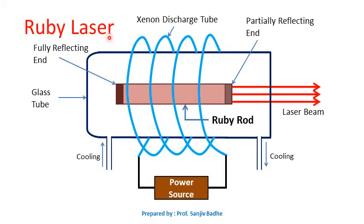In this session we will discuss the ruby laser. This diagram shows the construction of the ruby laser. Ruby laser is a solid state laser. The active medium is a rod of a ruby crystal. A resonant cavity is formed with the help of two mirrors — one fully reflecting mirror at one end of the ruby rod, and a partially reflecting mirror at the other end. Laser beam output is obtained through this partially reflecting end.